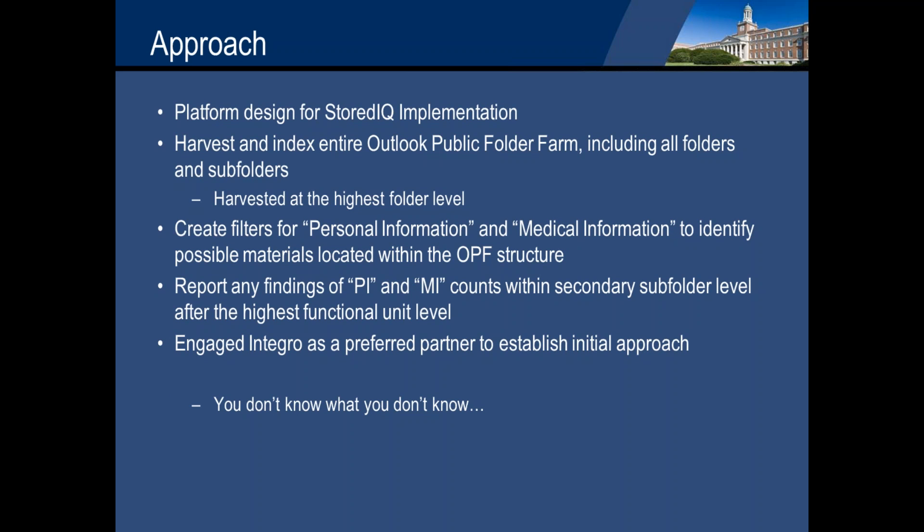We initially started our harvest at the highest folder level. With that, we then created filters for personal information and medical information, so that we could use that to locate potential materials within our Outlook public folder structure. After that, we were asked to report on any potential findings of PI or MI — as far as counts — as part of our high-low heat map within our secondary folder levels, which was kind of the second level down from the highest level. We engaged Integro as a preferred partner to help us establish this initial approach.